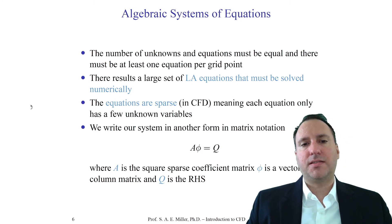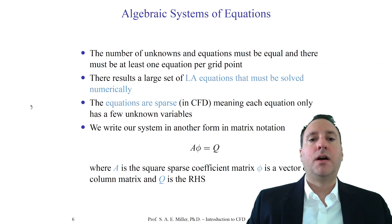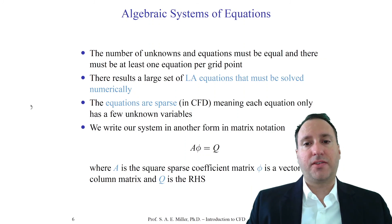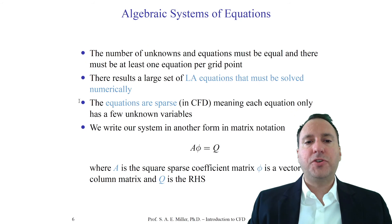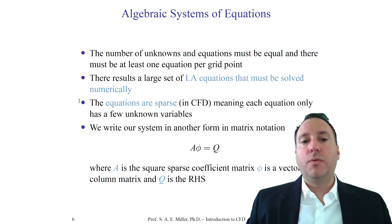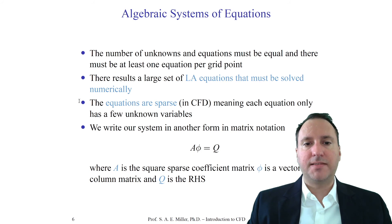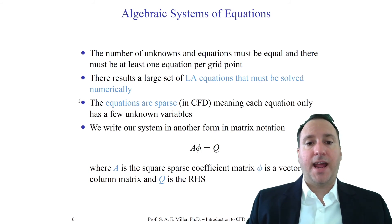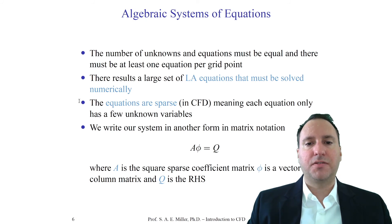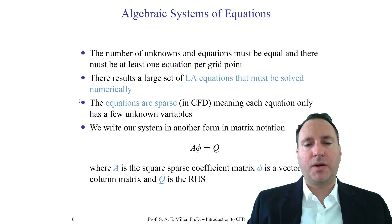Typically in CFD, the coefficient matrix A will be sparse — most elements will be zero, with perhaps 1% or less non-zero values. A dense matrix would mean most values are non-zero, which is very seldom the case in CFD. This means we can solve our equations with specialized linear algebra solvers. We can rewrite our equations in the form A phi equals Q, where A is a square sparse matrix whose order corresponds to the number of equations and unknowns in the grid.